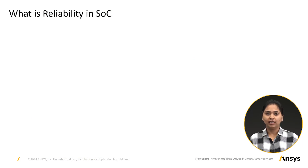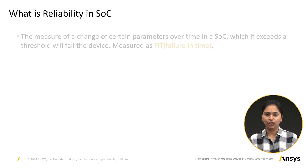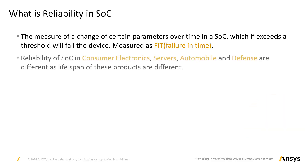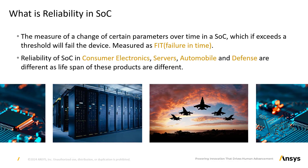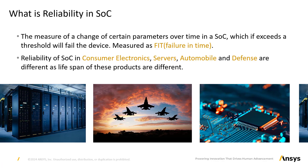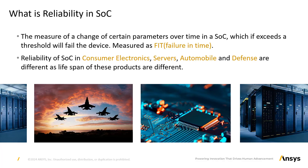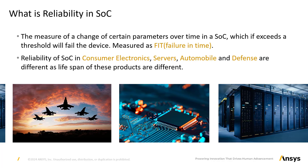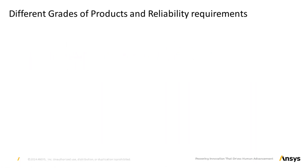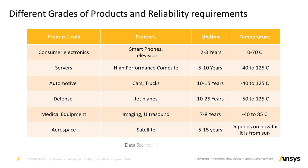Reliability in SOC is essentially the measure of change in certain parameters over time. If these changes exceed a certain threshold, the device will fail. Different electronic products have different lifespans. For instance, a smartphone processor typically lasts around 3-5 years, while a server chip has a lifespan of up to 10 years. These products are also subjected to different environmental conditions like temperature and pressure.